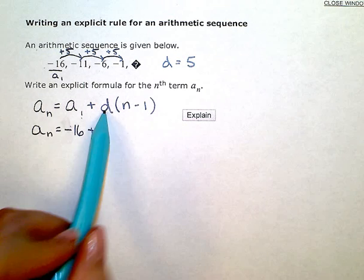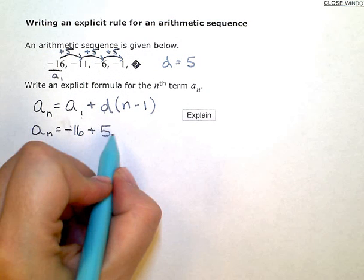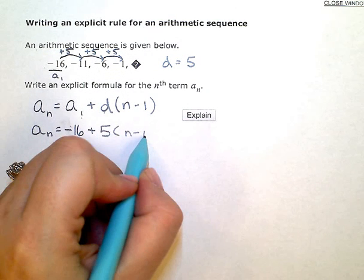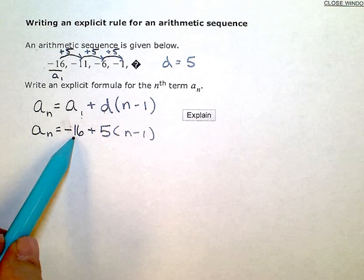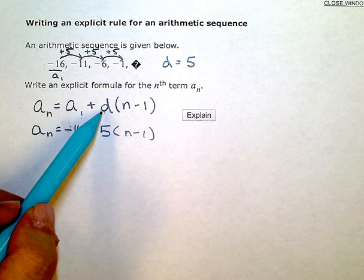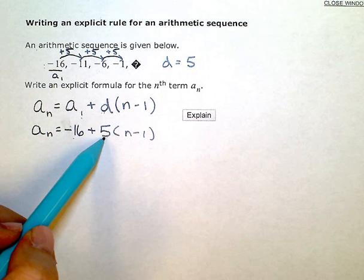So down here for D, I'm going to put 5, and then I have n minus 1. So from this general formula, all I need to do is substitute in the start value, negative 16, and then my common difference, which is 5. From there, I just simplify.